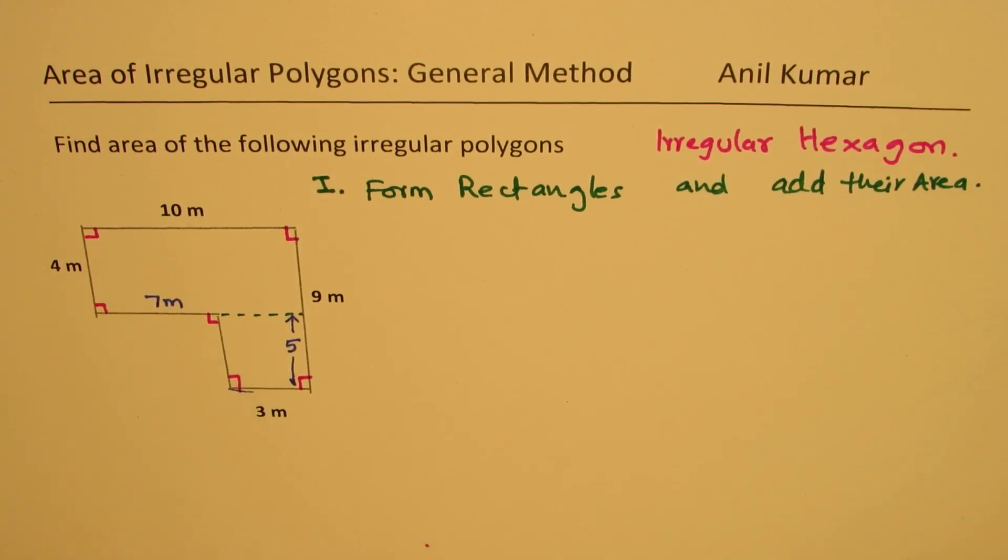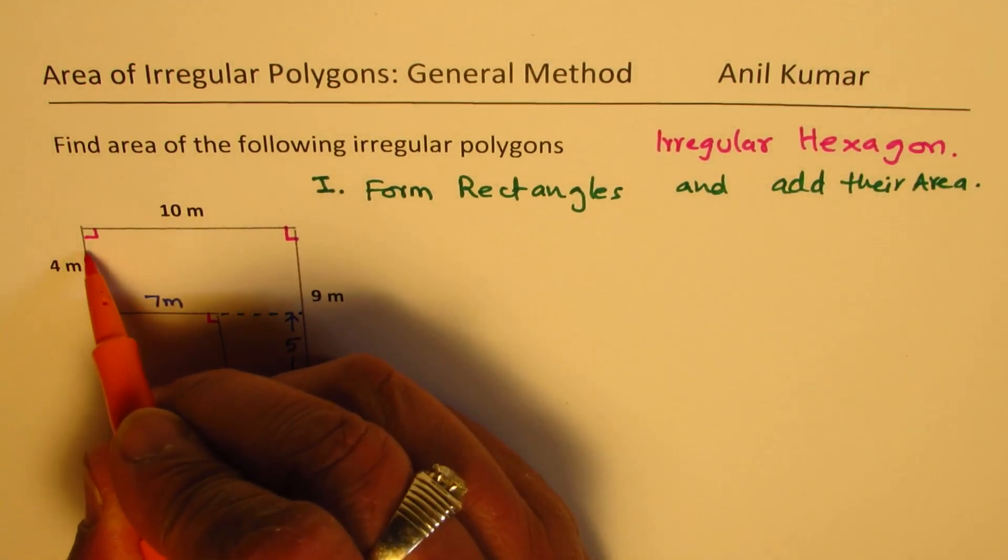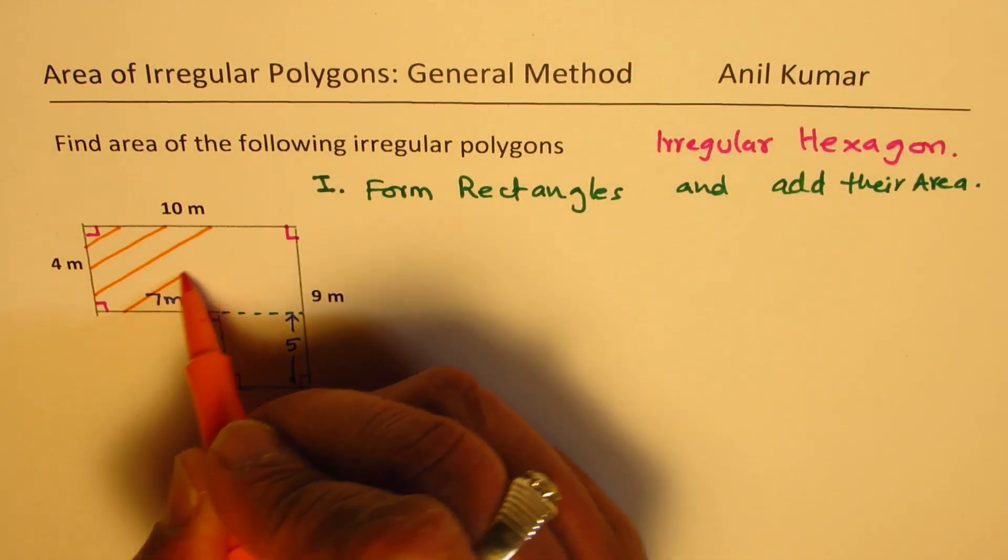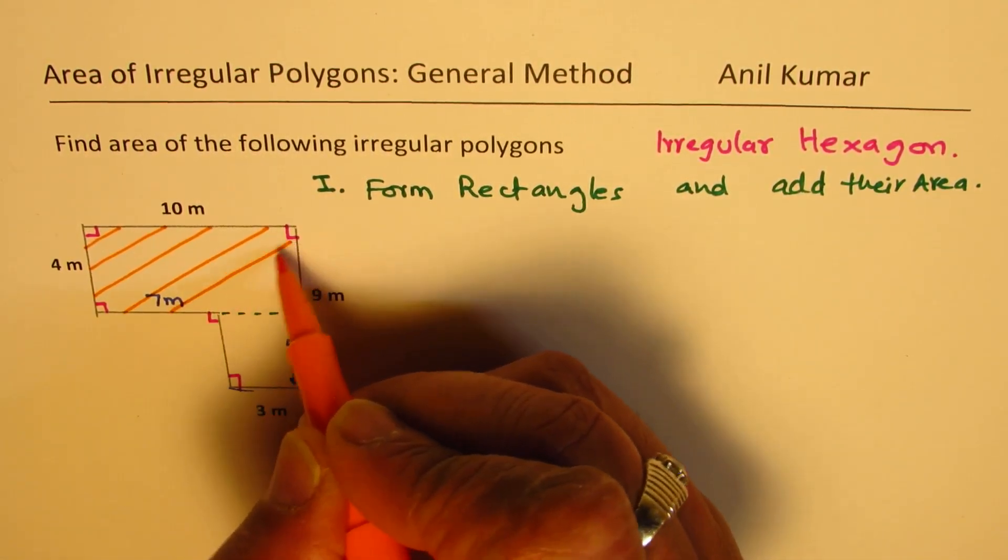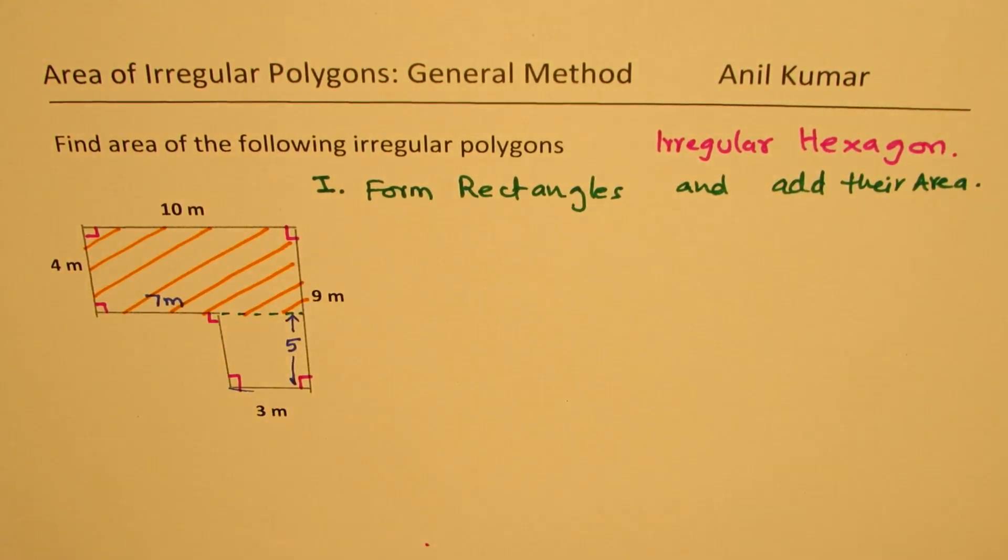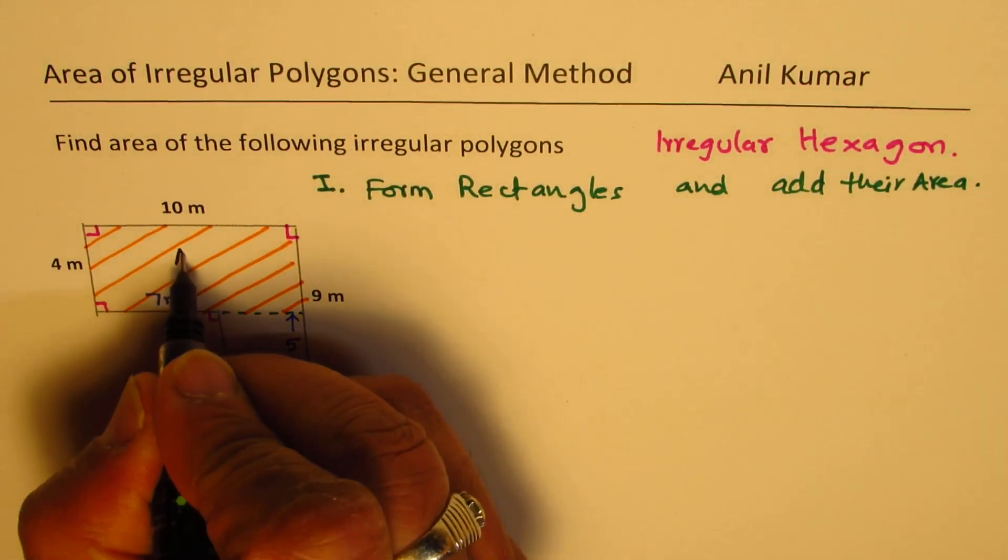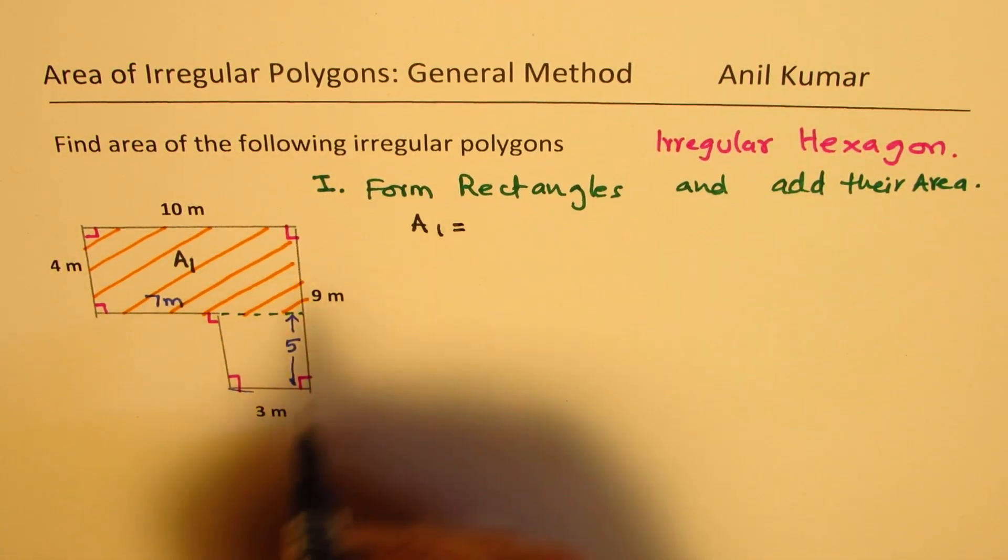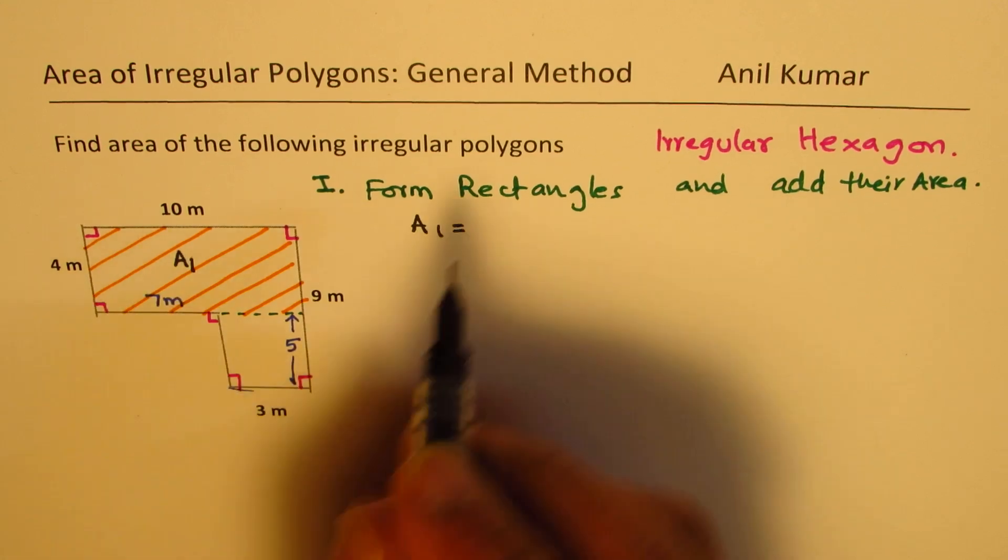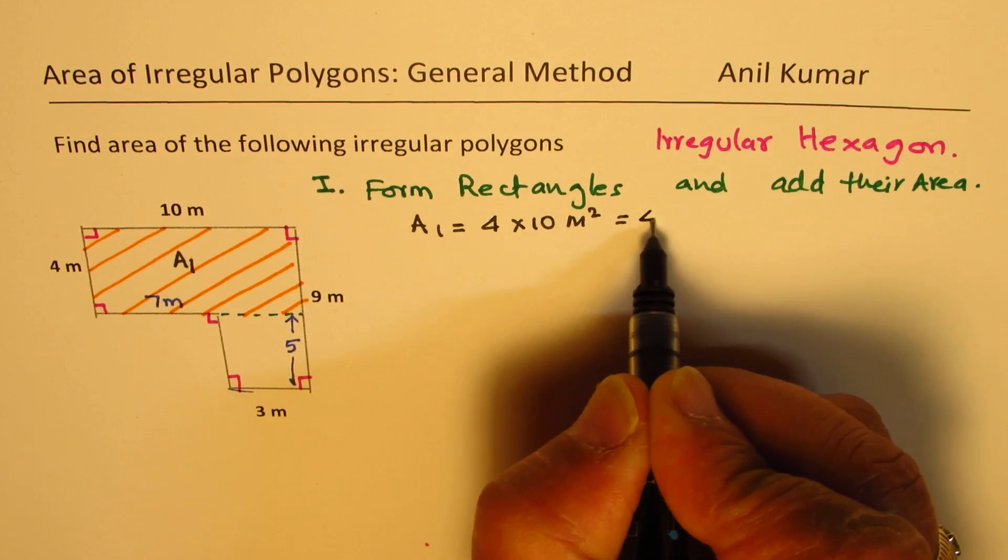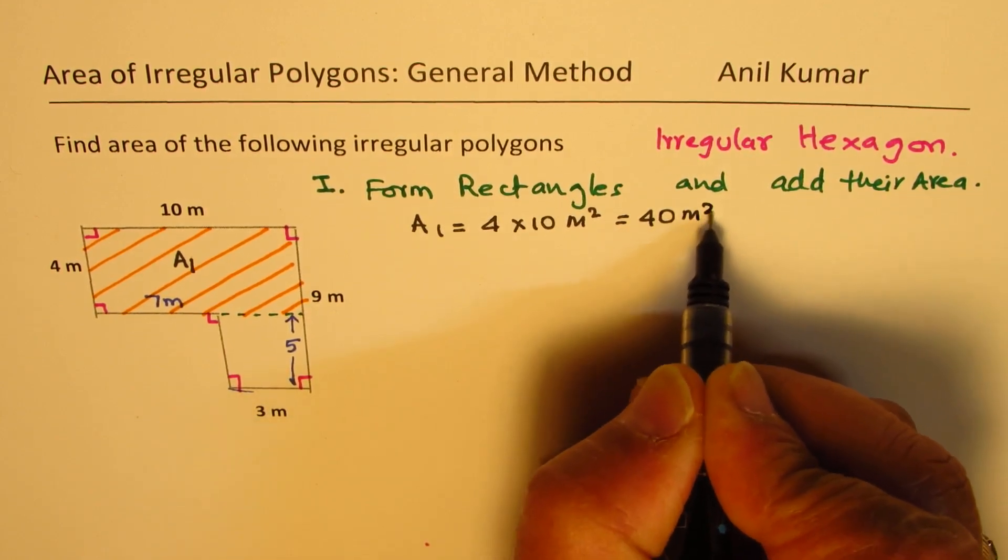Now, what we can do here is that we can add the area of these two rectangles. So one rectangle I'm shading now, let's call this as A1. So we'll call this rectangle as A1. And area A1 is basically equal to 4 times 10 meters squared, which is 40 meters squared.